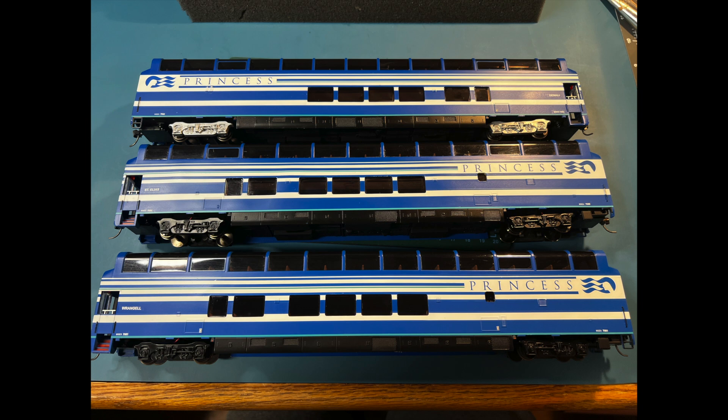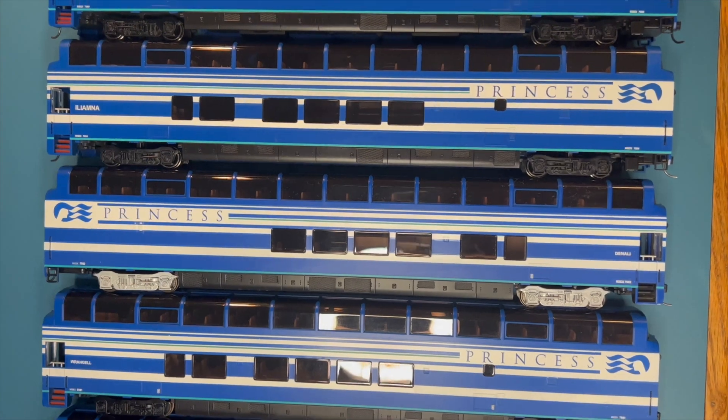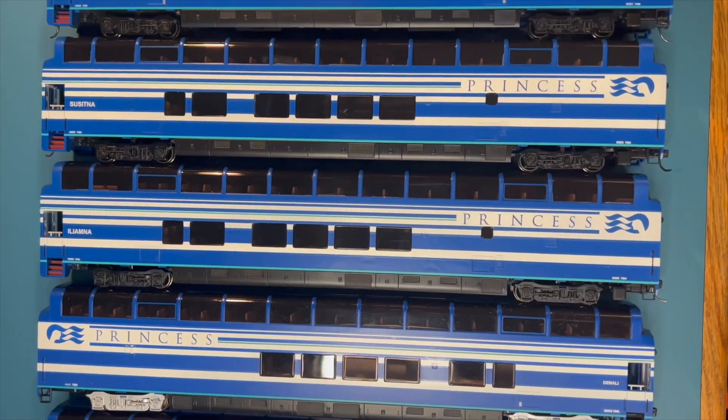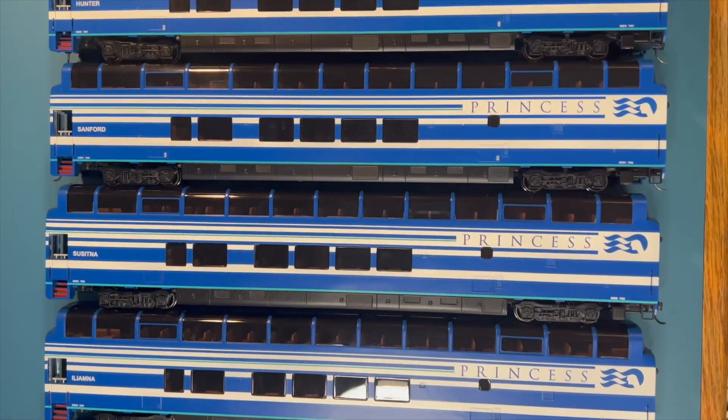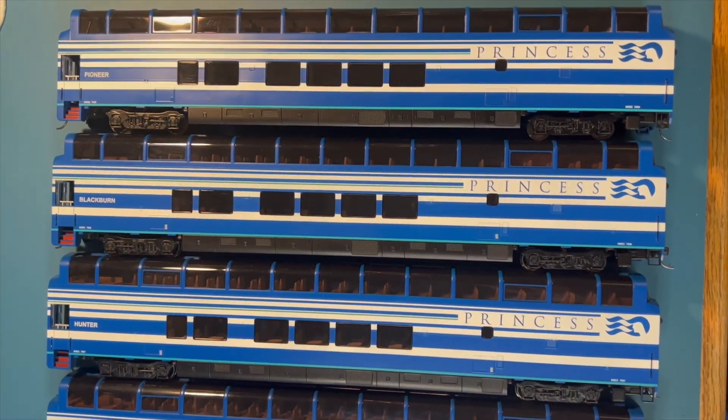Here we are with the three I just finished decaling and I still need to get the numbers for the other sides but that can be done at a later date and I'm going to show you all nine that I currently have in order from St. Elias, Rangel, Denali, Iliyama, Susitna, Sanford, Hunter, Blackburn, and Pioneer.